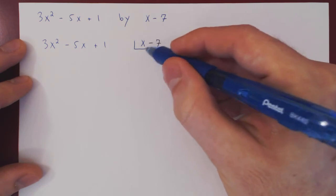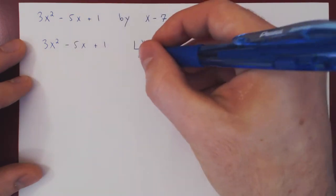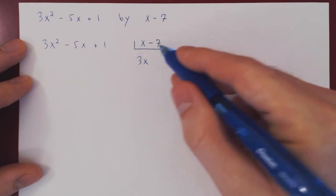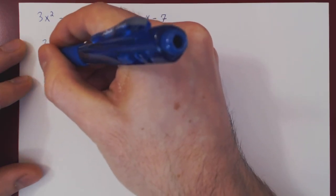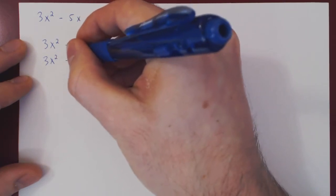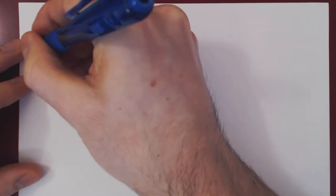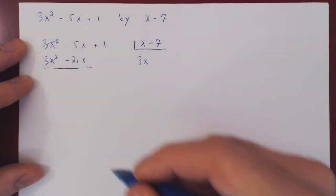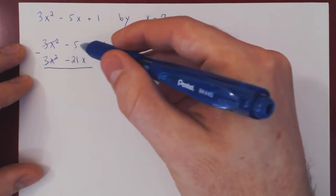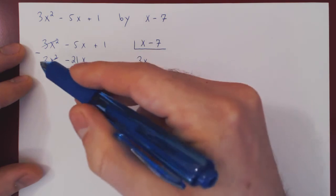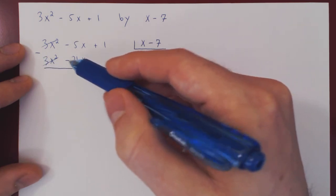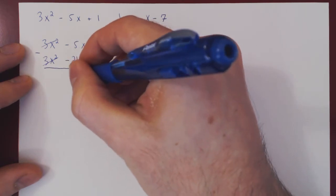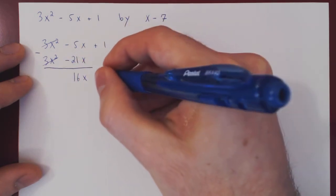We want to divide 3x squared minus 5x plus 1 by x minus 7. What times x will give us 3x squared? Obviously 3x. Multiply out by 3x — we get 3x squared minus 21x. We subtract: these two cancel. Negative 5x minus negative 21x gives plus 21, so 21 minus 5 is 16. We get 16x, plus a leftover of 1.